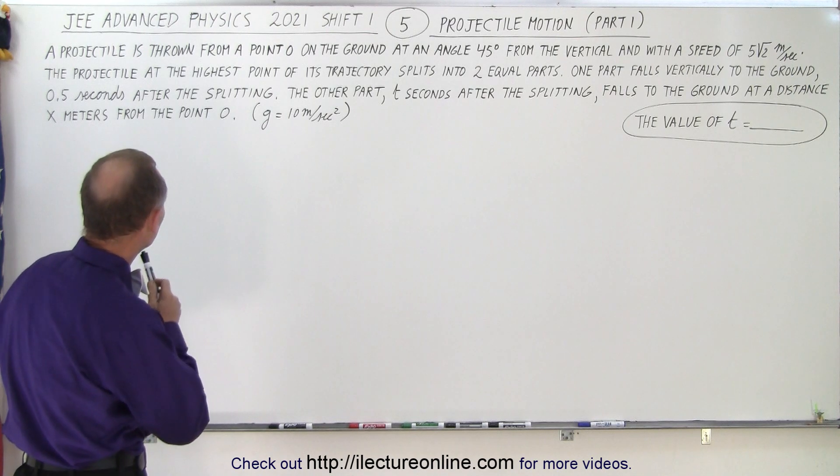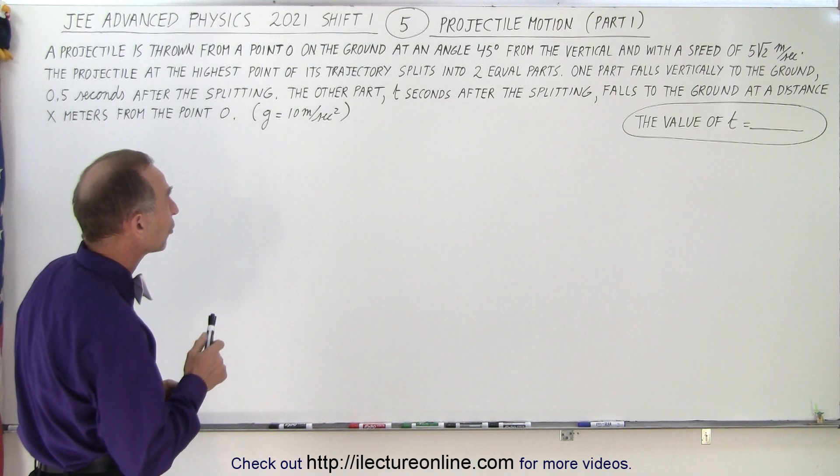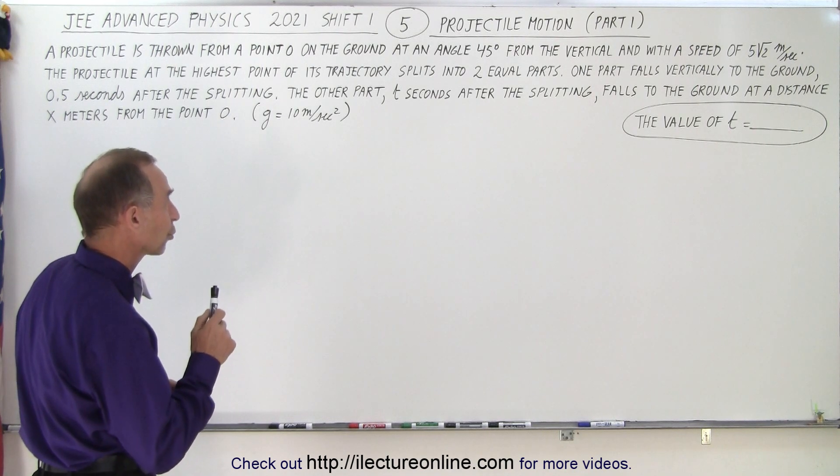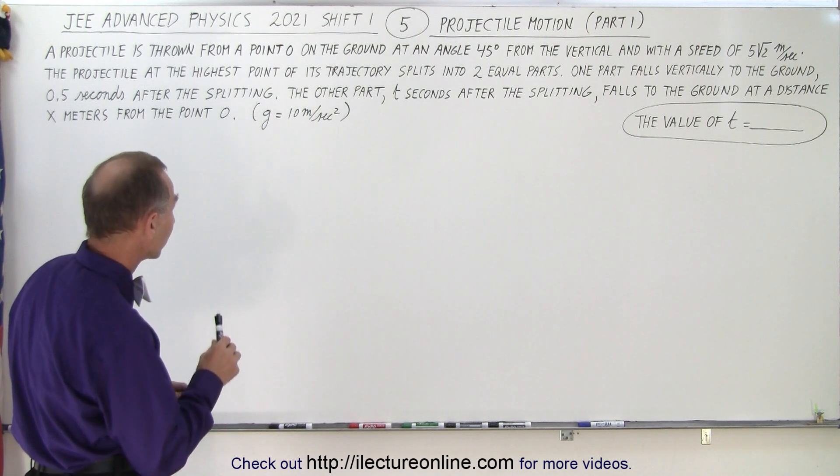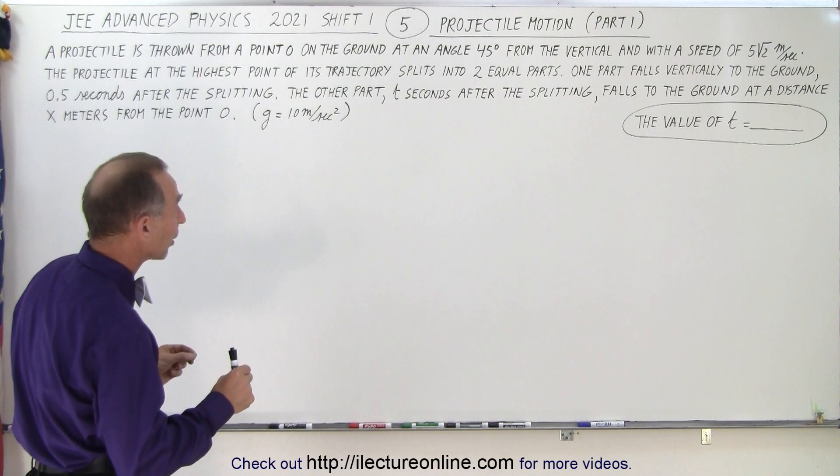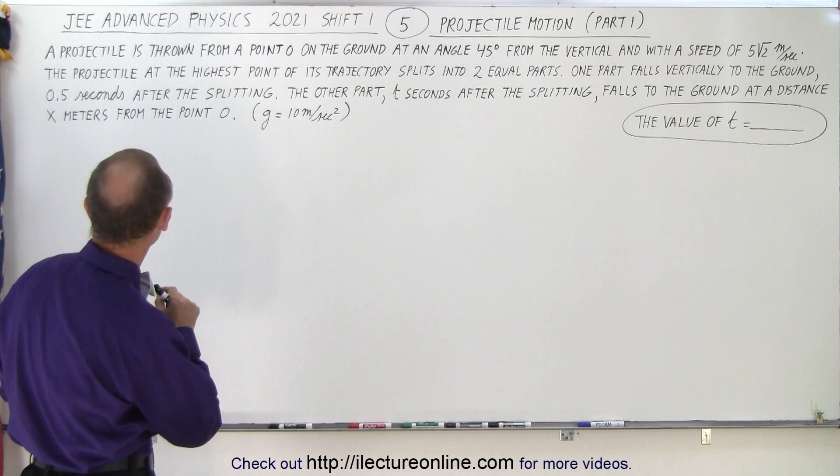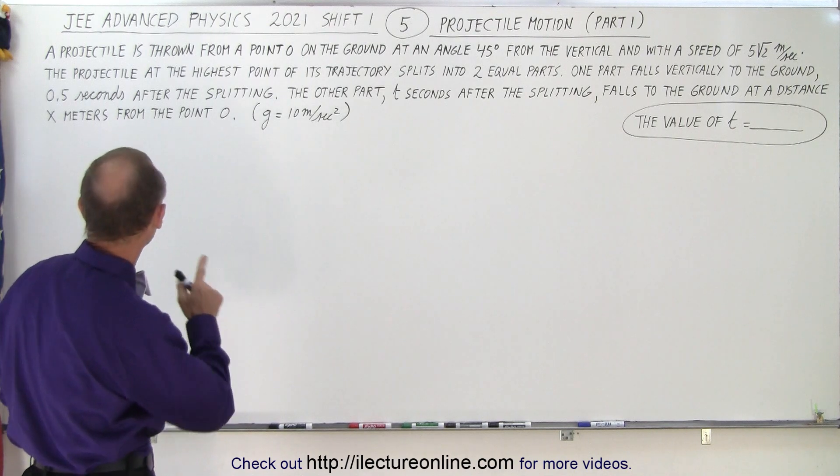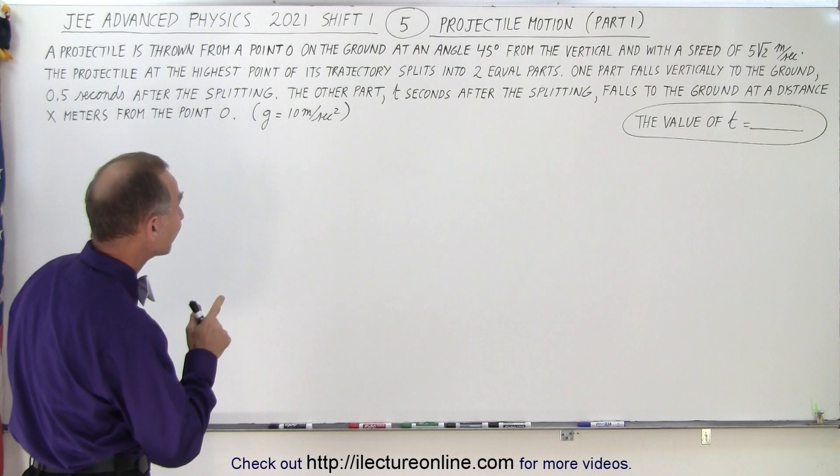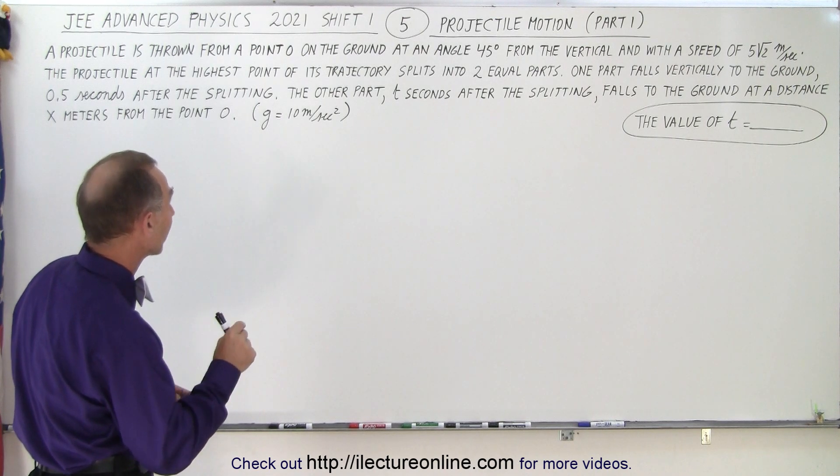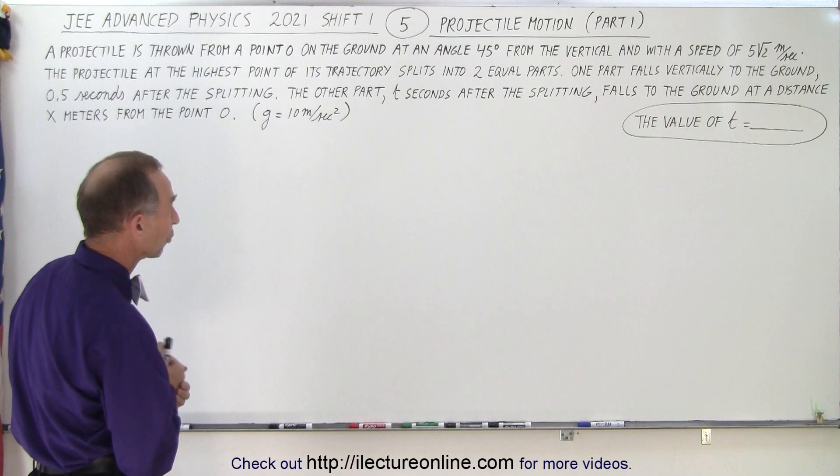A projectile is thrown from a point O on the ground at an angle 45 degrees from the vertical and with a speed of 5 times the square root of 2 meters per second. The projectile at the highest point of its trajectory splits into two equal parts. One part falls vertically to the ground 0.5 seconds after the splitting. The other part, t seconds after the splitting, falls to the ground at a distance x meters from point O. And let's take g as 10 meters per second squared.